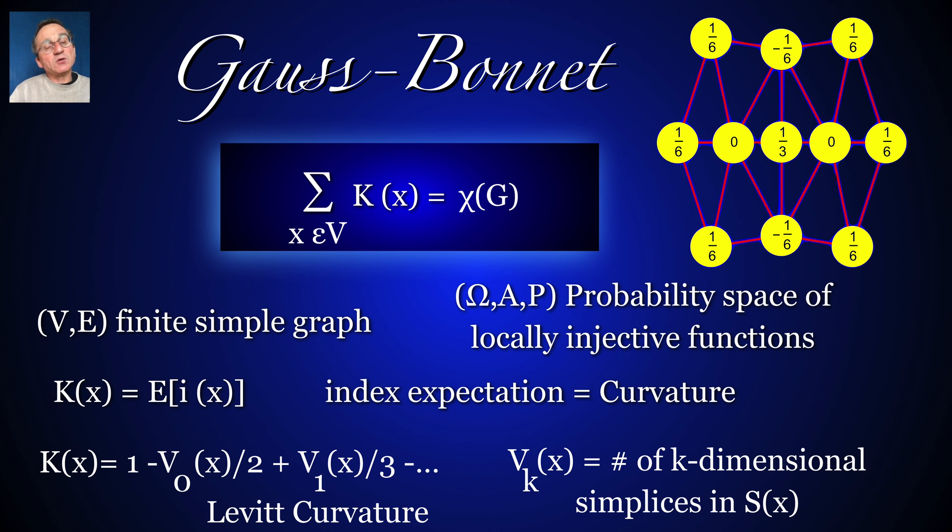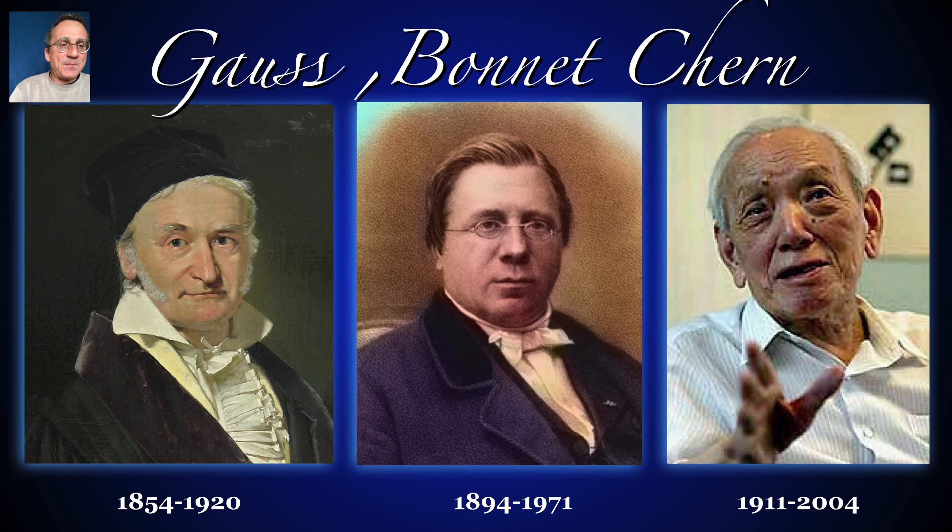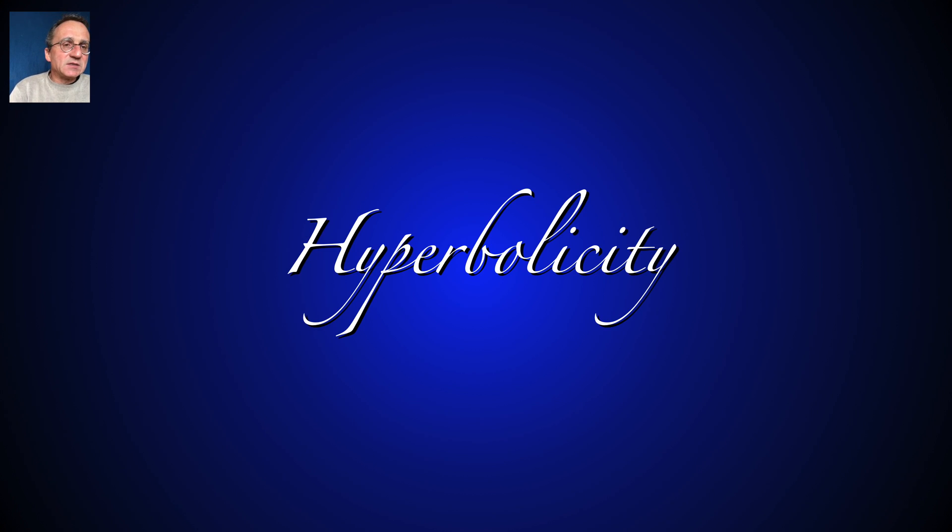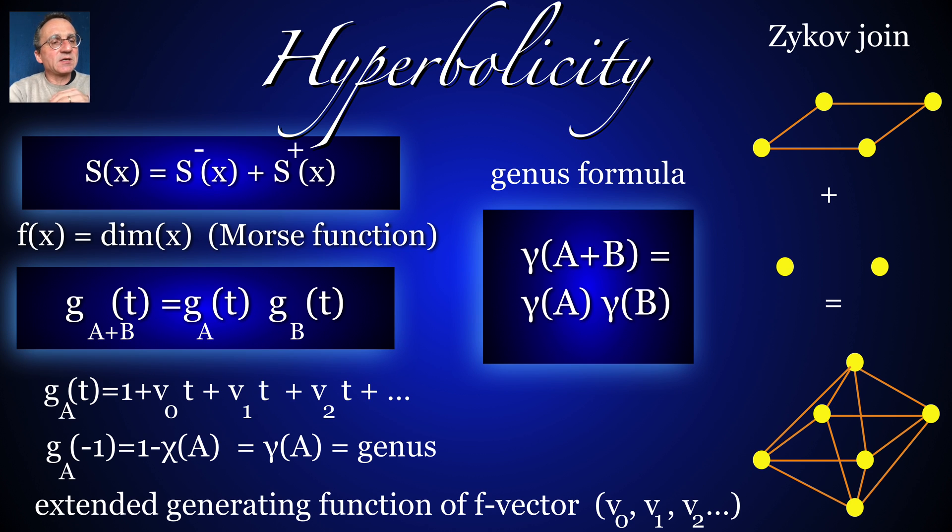So take any probability space of locally injective functions and then take the expectation of the index and you get the curvature. Particularly a nice case if you take the uniform measure on all colorings or if you take IID random variables at every vertex, in that case one gets a curvature I call the Levit curvature which is particularly elegant. So here are portraits of Gauss, Bonnet, and Chern. Chern did a higher dimensional version of Gauss-Bonnet's theorem. In any simplicial complex there is also some hyperbolicity.